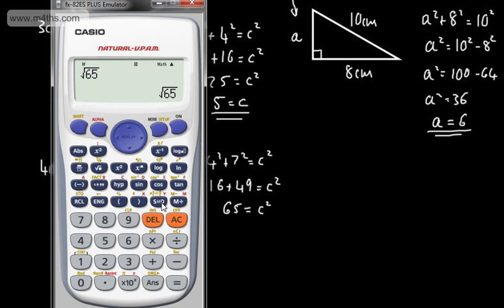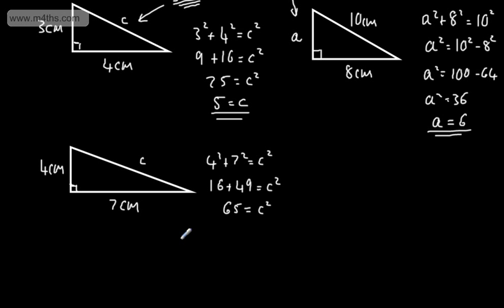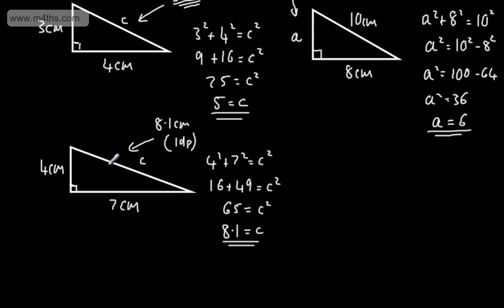Taking the square root of 65 and rounding to one decimal place gives 8.1. So C equals 8.1 centimetres, to one decimal place. In a question, you'll be given a level of accuracy — it might be two decimal places or two significant figures. Note that the hypotenuse must be longer than either shorter side: if 4 and 7 are the shorter sides, the hypotenuse has to be longer, so if we got 6 centimetres we'd know we'd made a mistake.